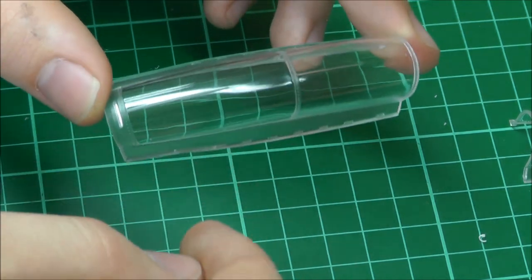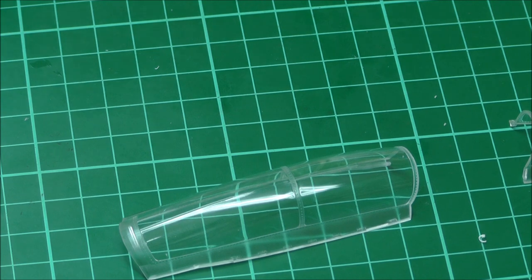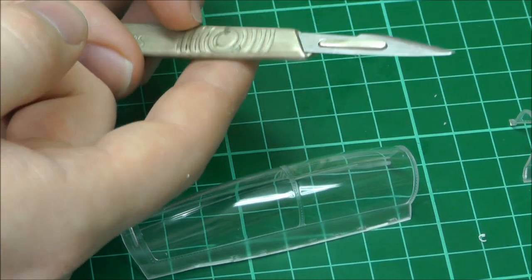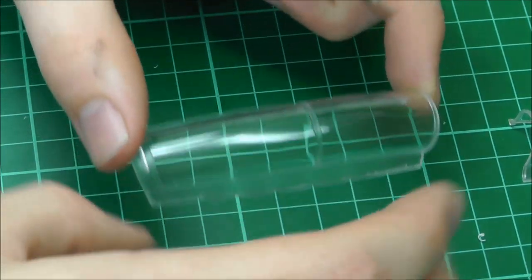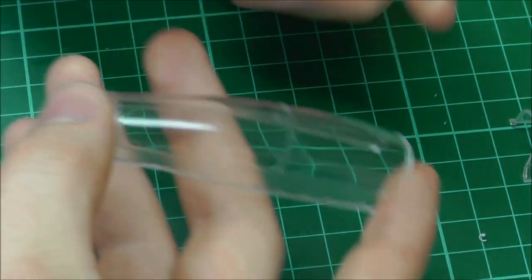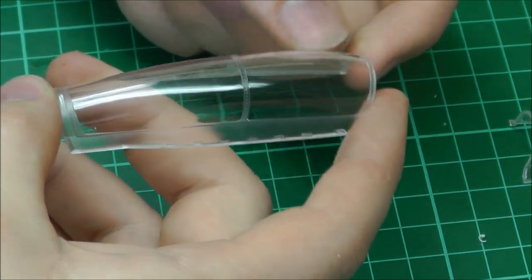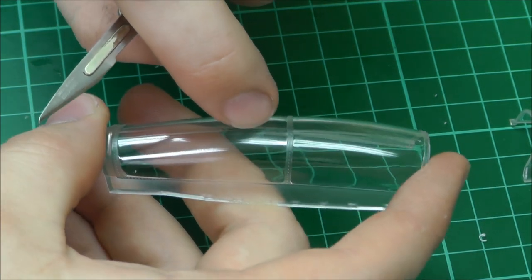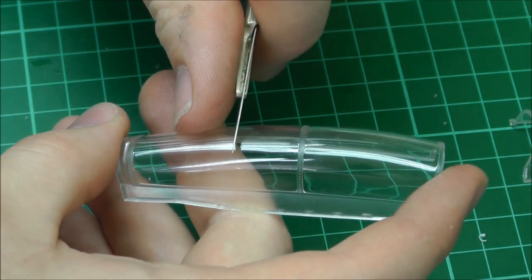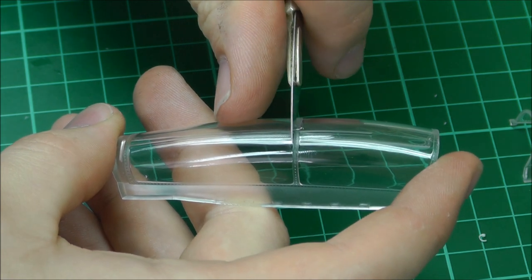So this is something we want to take care of. To get rid of this seam line, the first thing I do is put a nice fresh number 11 blade onto my Windsor and Newton number three handle. What you want to do - and this is where you need to be very careful - is very, very lightly where our little seam line is, just start to scrape it across.